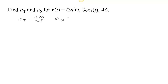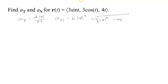a_N, we remember, is kappa times the speed squared. But it's hard to find the curvature — that usually takes some time. So usually it's faster to find the square root of the length of the acceleration squared minus a_T squared.